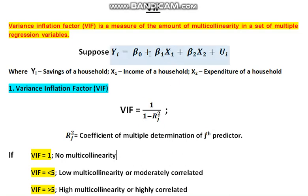Now if VIF is less than or equal to 5, then we will say there is the problem of multicollinearity but that is very low, or we say it is moderately correlated or there is the problem of moderate multicollinearity.